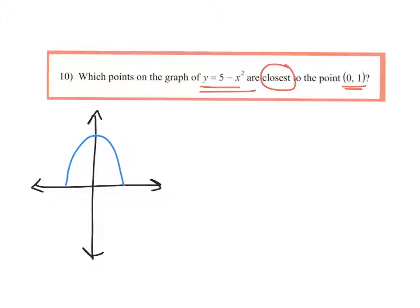And then the point (0, 1) is right here. So there's (0, 1). We're trying to figure out which points on this parabola - there's all these little dots that are on the parabola - which one is closest to my big red dot there.